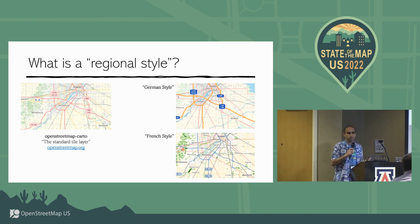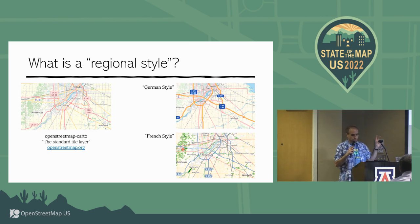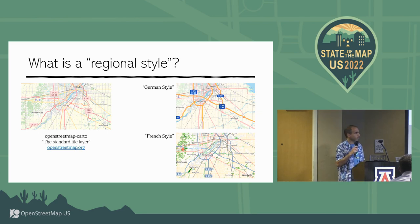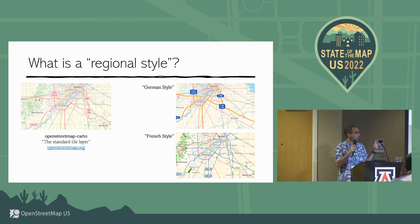I'd like to start with a description of what a regional style is. If you head over to OpenStreetMap.org, the style you see there — the so-called standard tile layer, also known as OpenStreetMap Carto — is a globally relevant style, but there are also national-specific styles, like the French and the German styles pictured here on the slide.